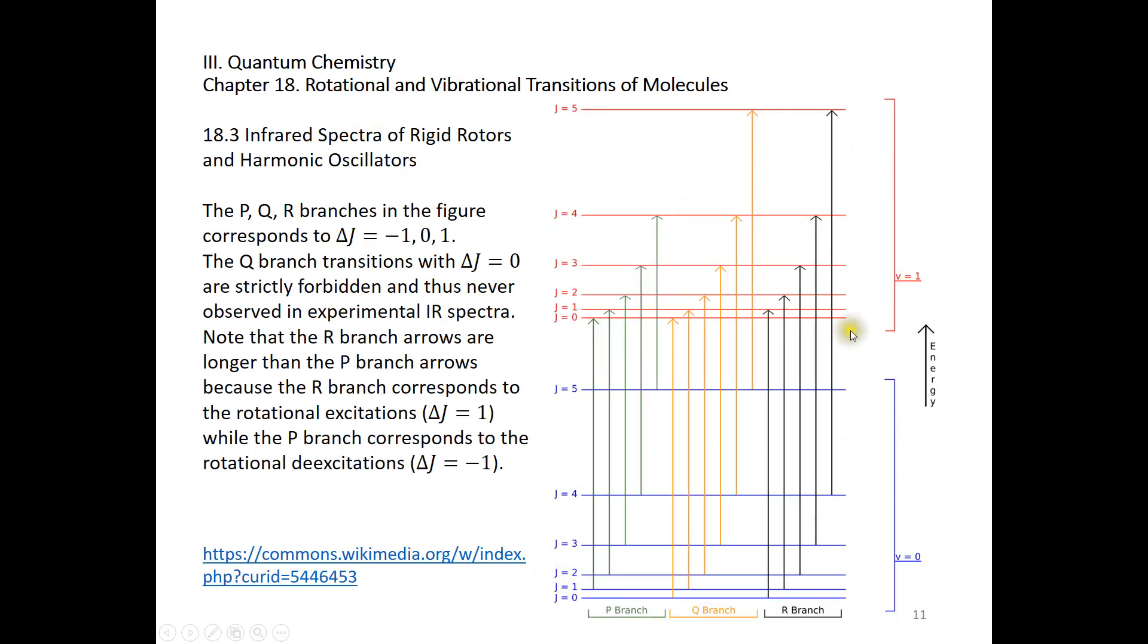Now let's look at this diagram. When we observe the vibrational transition from level 0 to level 1, this transition may be accompanied by rotational excitation, the R branch, or rotational de-excitation, the P branch. In the R branch, J can go from 0 to 1, 1 to 2, 2 to 3, 3 to 4, and 4 to 5. Delta J is plus 1.